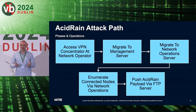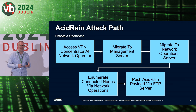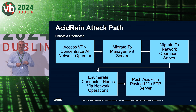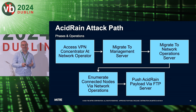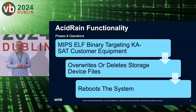SentinelOne spotted the malware in the wild, reversed it, and concluded pretty effectively — based upon functionality, strings, and timing — that this appears to be linked with the KA-SAT outage. This was then confirmed by representatives from Viasat, the KA-SAT operator, who also followed up with their own blog post within hours of the SentinelOne post going live. We didn't know how this was deployed until about a year later when Viasat representatives presented additional information at Black Hat and DEF CON. The event started with access to a VPN concentrator at the KA-SAT network operator's NOC in Italy.